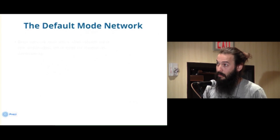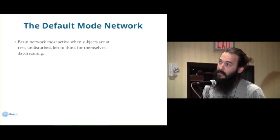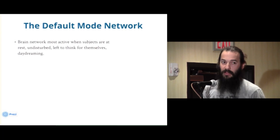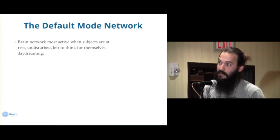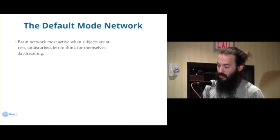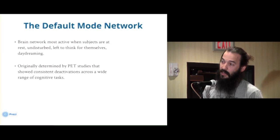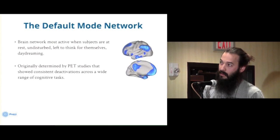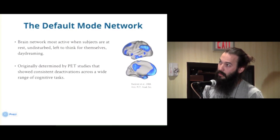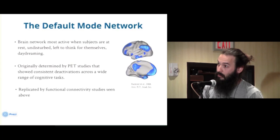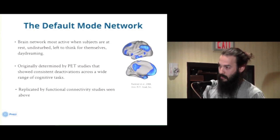The default mode network is the network most active when subjects are left to rest, undisturbed, eyes closed, daydreaming — often associated with free association or open modes of thinking. It was originally determined by PET studies that showed deactivations across a wide range of tasks. This is the PET meta-analysis from Buckner et al., and its findings have been replicated by the functional connectivity analyses I've already described.